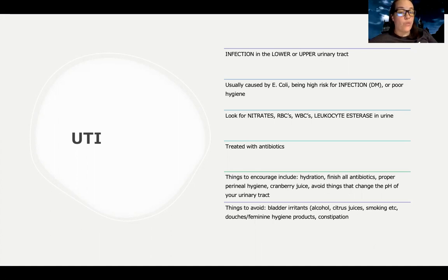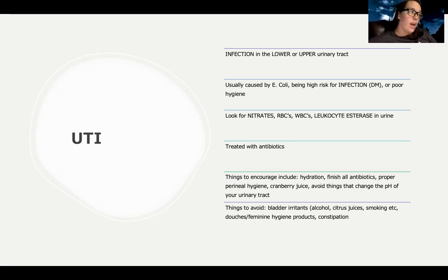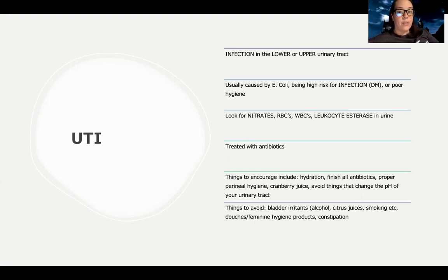If you're at high risk for infection — like you have diabetes or poor hygiene — you're also going to be at higher risk for UTI. And females are at higher risk than males. We're going to get a urinalysis and look for nitrates, red blood cells, white blood cells, and leukocyte esterase in the urine as signs that the patient may have a UTI.